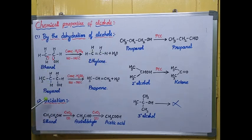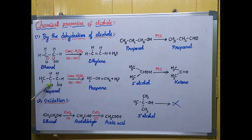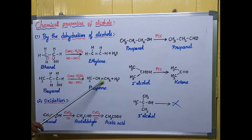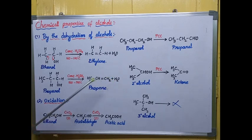Next, taking propanol — the same reaction occurs. In the presence of sulfuric acid, propanol also loses a water molecule: hydrogen leaves from one carbon and OH minus leaves from the adjacent carbon, forming a double bond at the second carbon. This gives propene along with the liberation of a water molecule. So dehydration results in the formation of doubly bonded compounds — that is, alkenes.